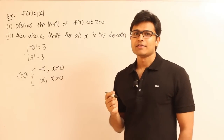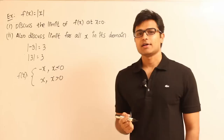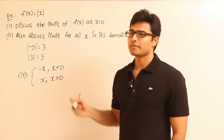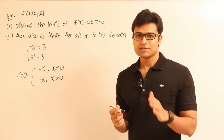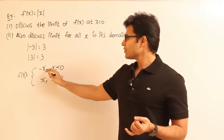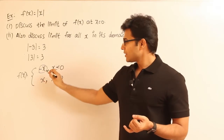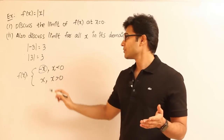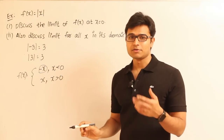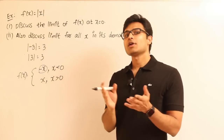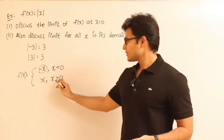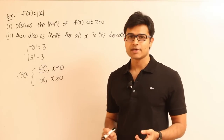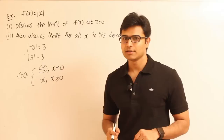You might have a doubt: if mod x has to always be a positive number, why are we writing it as minus x? The reason is simple. Even though we write minus x, x itself is less than 0, meaning x is a negative number — so x already has a negative sign inside it. With another negative sign outside, overall it becomes positive. And when x is greater than or equal to 0, it is already positive, so we don't need any sign — the output is positive directly.